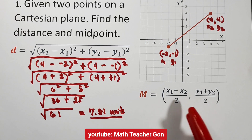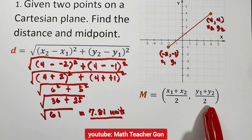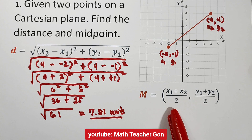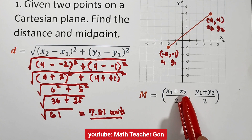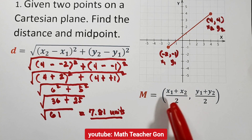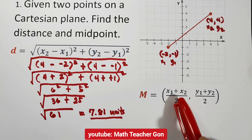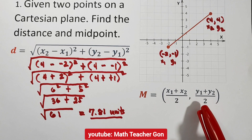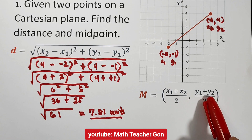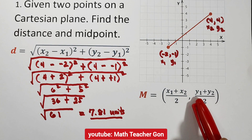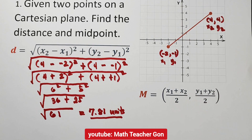Now let us find the midpoint. The formula for midpoint is equal to x_sub1 plus x_sub2 — the sum of the x coordinates divided by 2 — and the sum of the y coordinates divided by 2, or y_sub1 plus y_sub2 over 2.